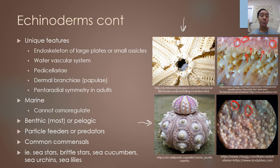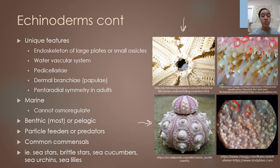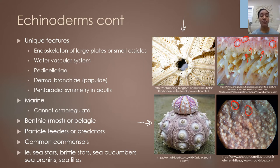Echinoderms are marine — you do not see them in brackish or fresh water because they cannot osmoregulate. The vast majority are benthic, living on the seafloor, but a few species can be pelagic. They can be found in deep seas and shallow waters like coral reefs and the intertidal zone. For the most part they're either particle feeders or predators, and they are common commensals with corals and other organisms. One example noted in the textbook is an organism that lives in the anus of sea cucumbers in a mutualistic relationship.